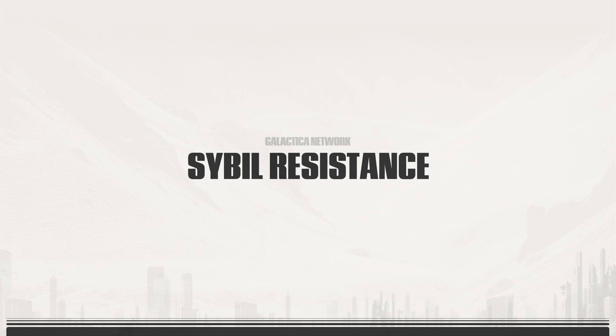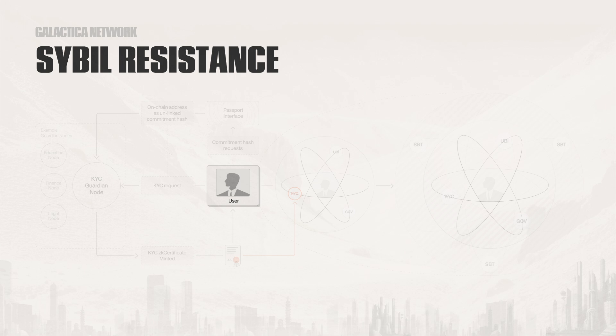To understand Sybil Resistance further and how it is achieved on Galactica Network, let's introduce a new user who has just discovered Galactica Network and works for a financial institution. Their goal is to take advantage of the many compliance services possible on the protocol, and to achieve this they will need to complete our zero-knowledge KYC process. This process begins with a user requesting a secure commitment hash through Galactica Network's passport interface. This commitment hash stores the user's on-chain address and prevents any documentation sent to an off-chain entity from being associated with the user's on-chain address. The commitment hash, alongside any documentation required by the intended notary, is sent to what we call a guardian node. Guardian nodes allow off-chain entities to notarise documents provided by on-chain users, and provide proof of this on-chain in the form of ZK certificates.